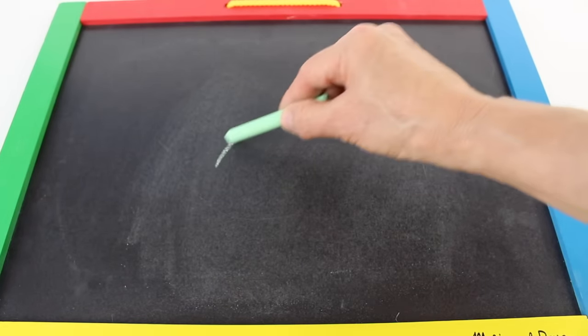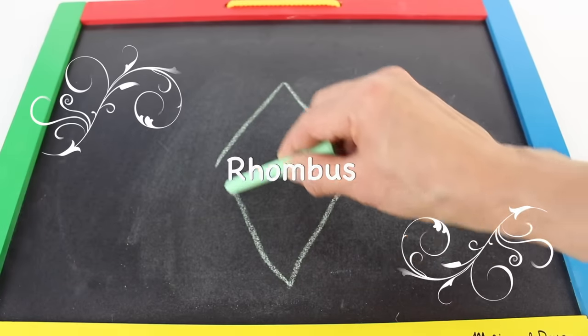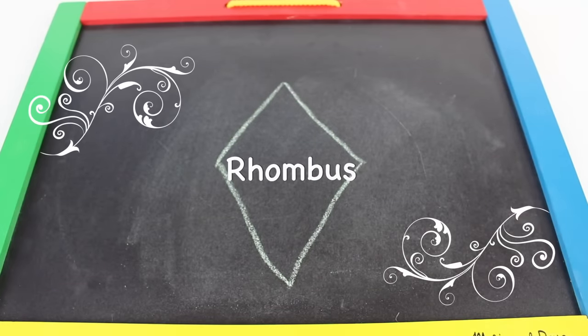Now let's draw a rhombus. A rhombus looks like a diamond.